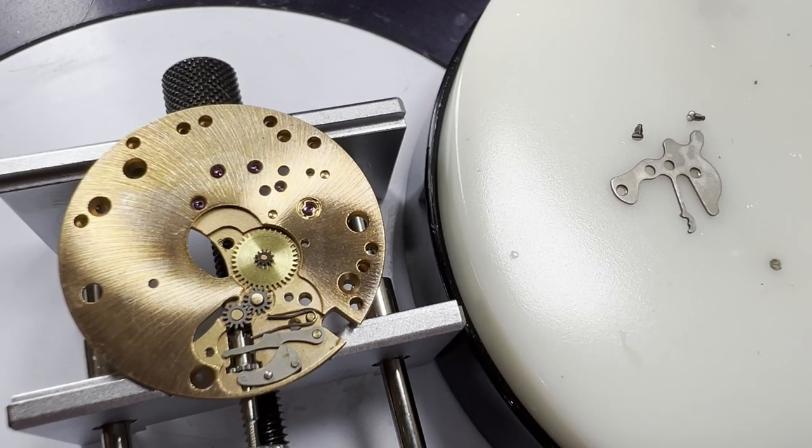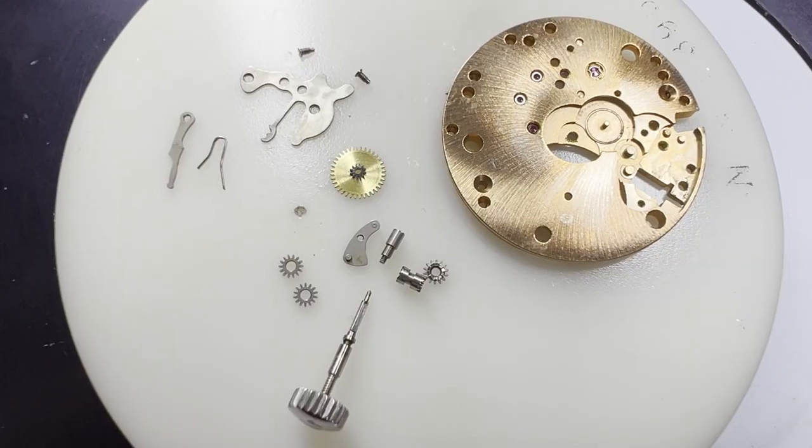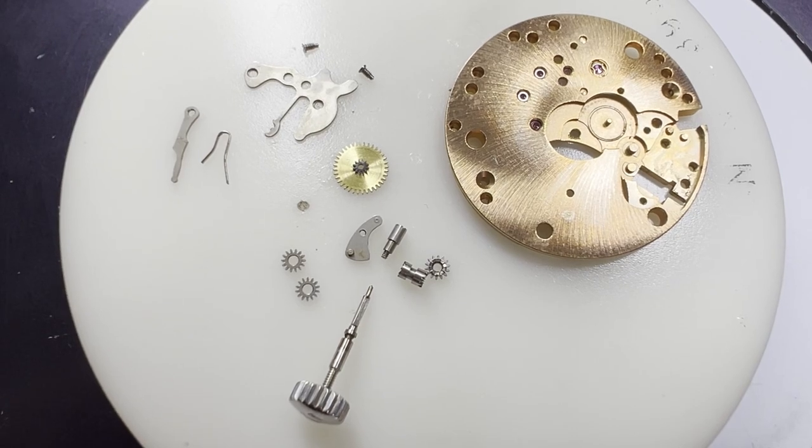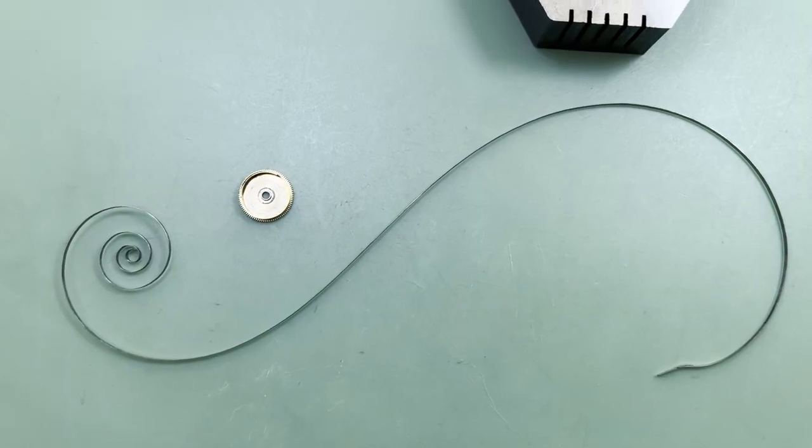Firstly, the setting lever spring, yoke and yoke spring, minute wheel and the two intermediate wheels, then the crown, stem, winding gear and sliding gear. To finish the disassembly, the mainspring and arbor are removed from the going barrel.